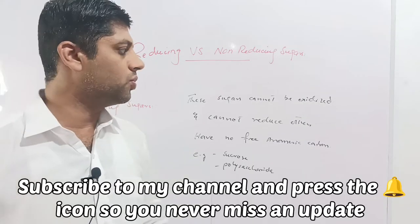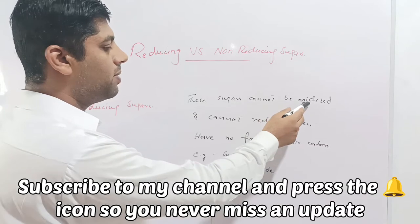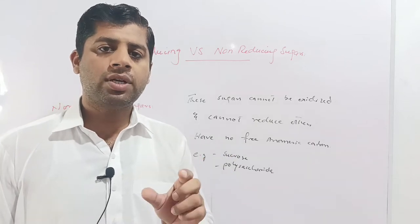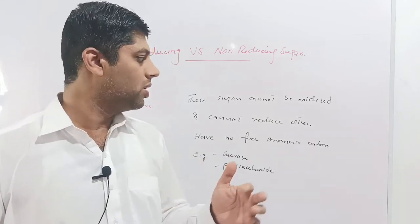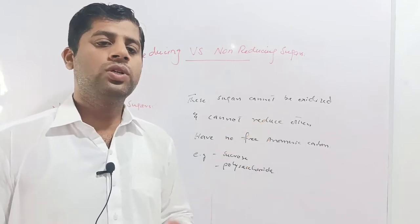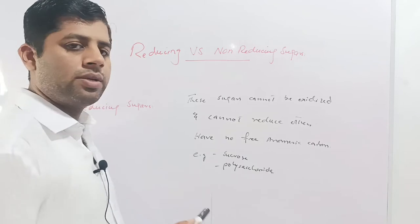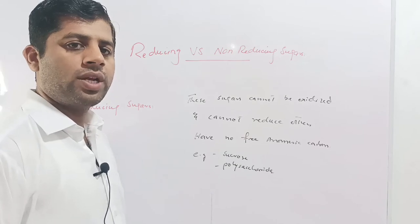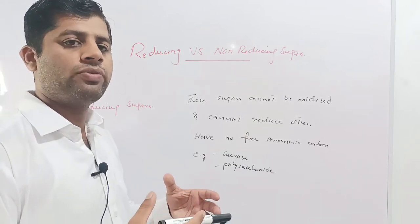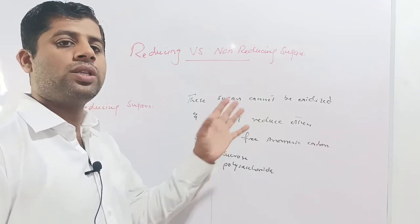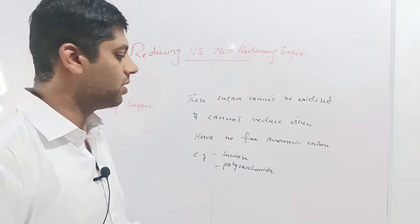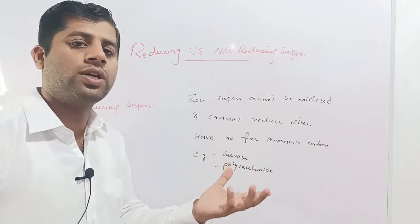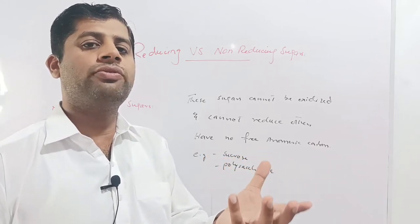The next class is non-reducing sugars. Non-reducing sugars cannot be oxidized and cannot reduce other molecules. The reason behind the non-reducing nature is that these sugars have no free anomeric carbon — the anomeric carbon is bound in the glycosidic bond. Therefore they cannot be oxidized and cannot reduce other molecules. Examples are sucrose and polysaccharides. We will draw the diagram of sucrose to explain how the anomeric carbon is bound in the glycosidic linkage and is not free for oxidation.